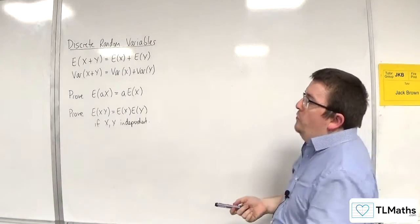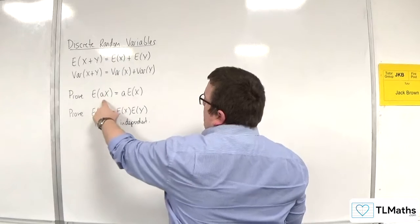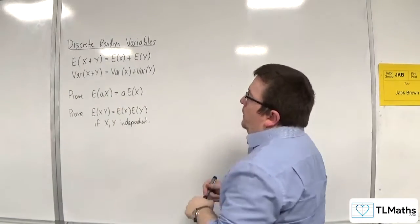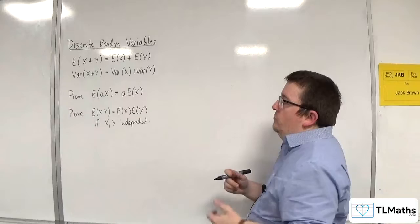So, first of all, prove the expected value of aX, where a is a constant multiplier, is equal to a times E(X). Well, this one's very quick, really.